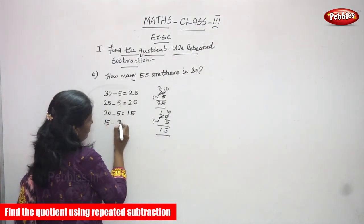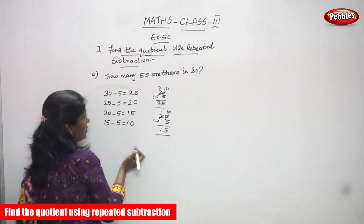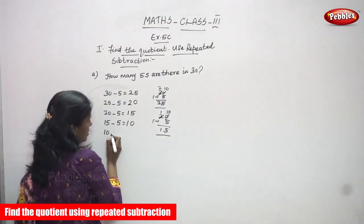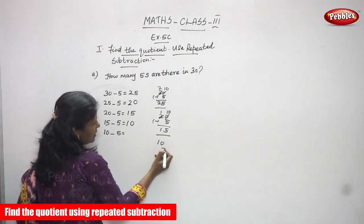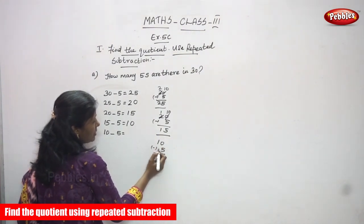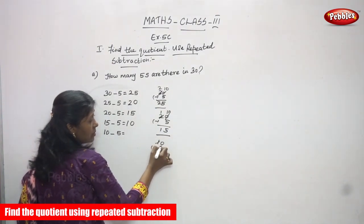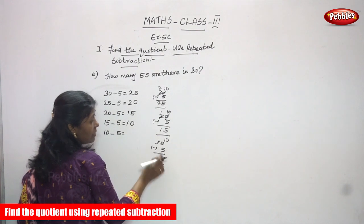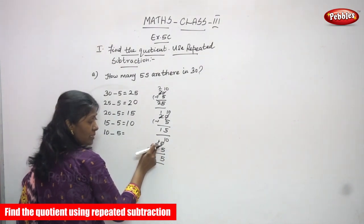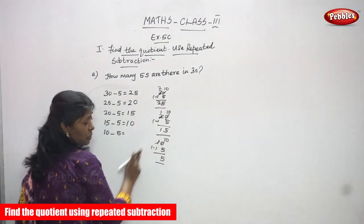Now again, 15 minus 5. 5 minus 5 is 0 and 1 you write again — so that is 10. 10 minus 5: 0 is not enough to subtract, so you have to borrow from the tens. This 0 becomes 10, 10 minus 5 is 5. You already borrowed 1 ten so it becomes 0. The answer is 10.